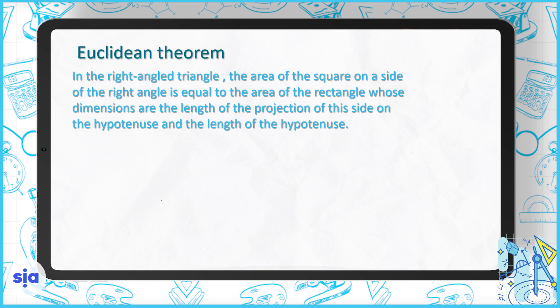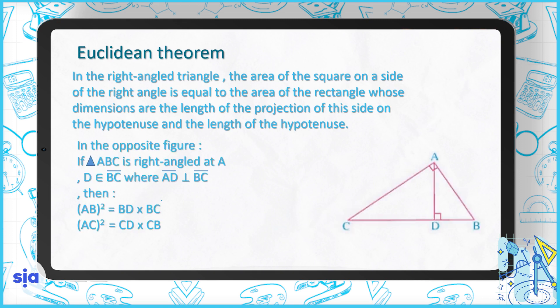What does this mean? This means, for triangle ABC which is a right-angled triangle at A, and D belongs to BC where AD is perpendicular to BC, then AB² = BD × BC.